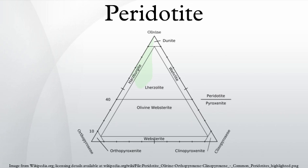Types of peridotite: Dunite contains more than 90% olivine, typically with a Mg/Fe ratio of about 9:1. Wehrlite is mostly composed of olivine plus clinopyroxene. Harzburgite is mostly composed of olivine plus orthopyroxene, and has relatively low proportions of basaltic ingredients.